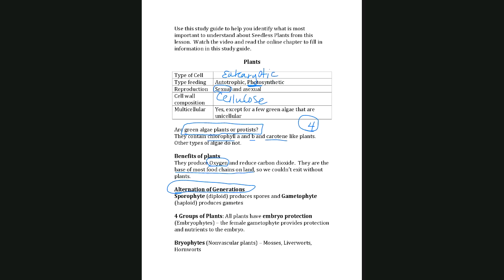All four groups of land plants have embryo protection — that's why we call them embryophytes. The embryo is the baby plant, and embryo protection means the plant provides some sort of protection or nourishment to that baby plant.